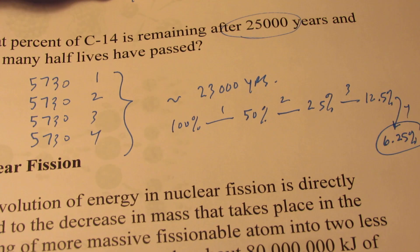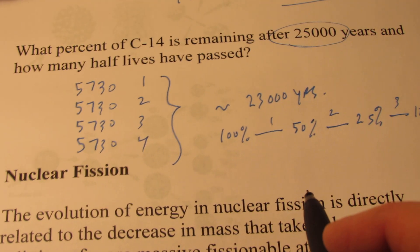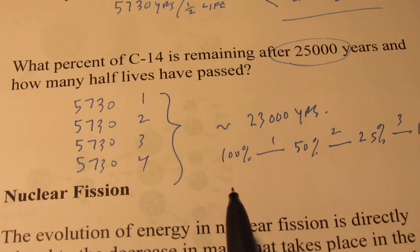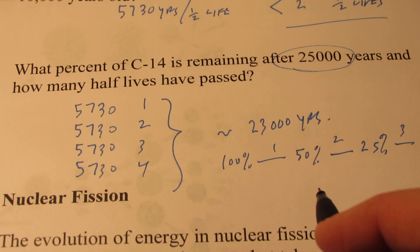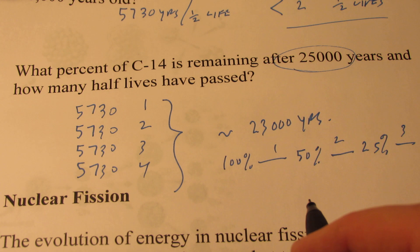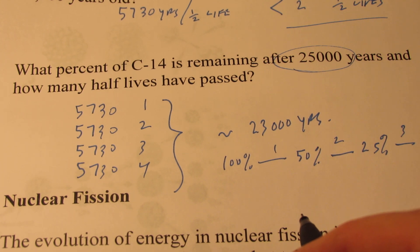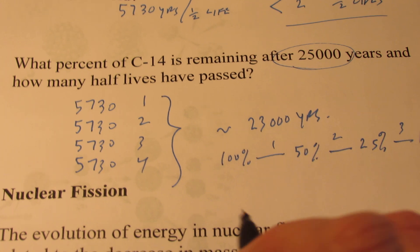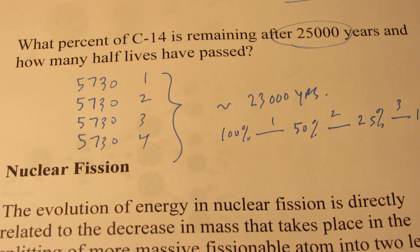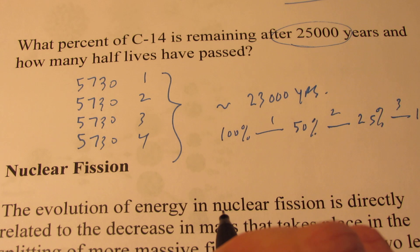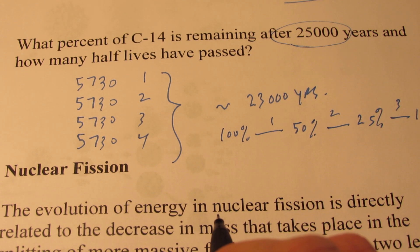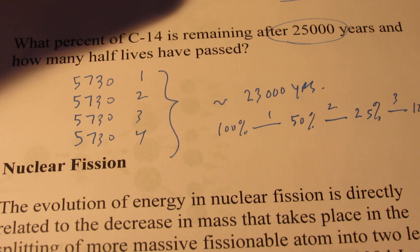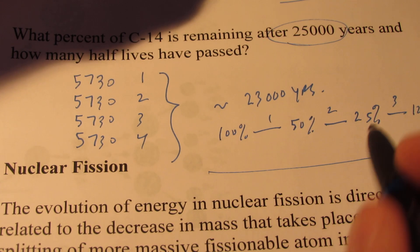In class we're going to talk about the Shroud of Turin, which has been carbon-dated. We're going to find out if it's a real artifact, as old as some people state it is. They claim it's the burial cloth of Christ, so that would mean it would have to be about 2,000 years old, or if it's some type of medieval hoax. I'll teach you how to do that in class, or you can look it up on Google.